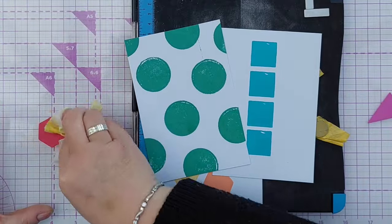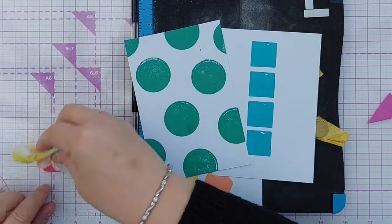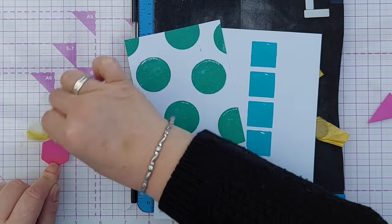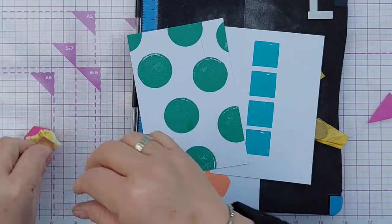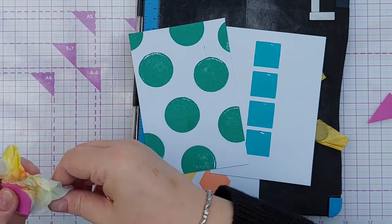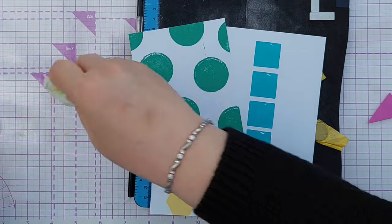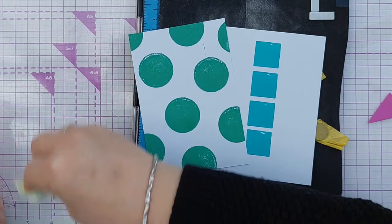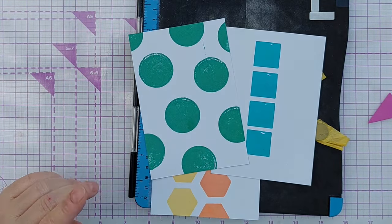I think that'll do. I hope you found this little bonus video helpful and that it's given you another tool that you can use: fun foam and dies or scissors to create simple basic shape stamps. Thanks for watching and I hope you enjoy the rest of the series. Bye for now.